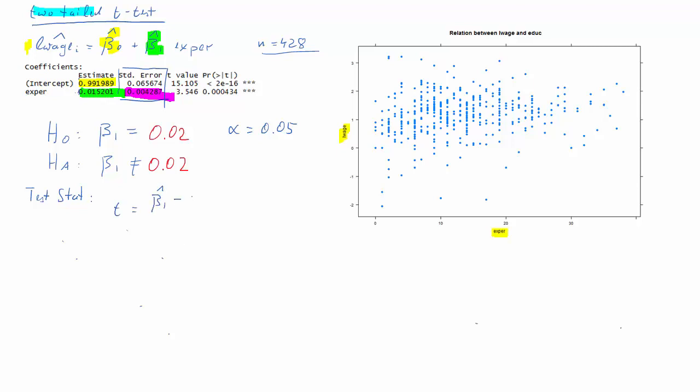And then importantly we need to know what test statistic to use. Here it is a t test and that's calculated as beta 1 hat minus beta 1 divided by the standard error of beta 1 hat. Now how is that distributed? You know, given the classic linear regression assumptions, that this is t distributed with n minus two degrees of freedom.